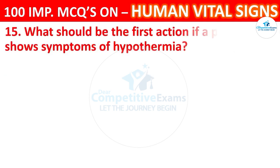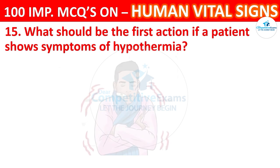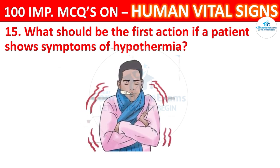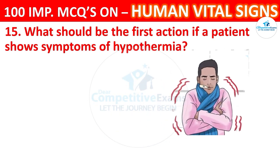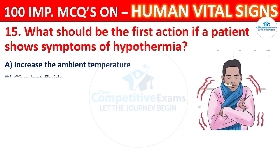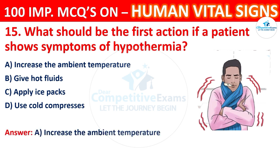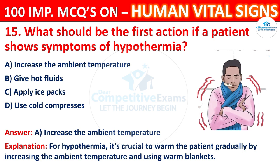Question 15: What should be the first action if a patient shows symptoms of hypothermia? Options: increase the ambient temperature, give hot fluids, apply ice packs, or use cold compresses. The correct answer is A, increase the ambient temperature. For hypothermia, it is crucial to warm the patient gradually by increasing the ambient temperature and using warm blankets.